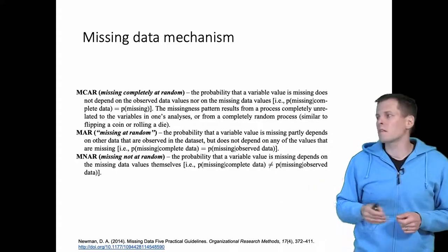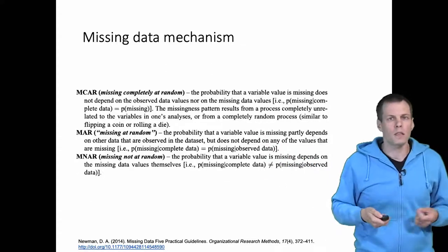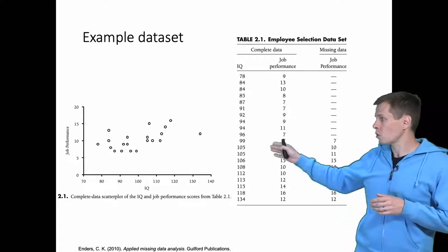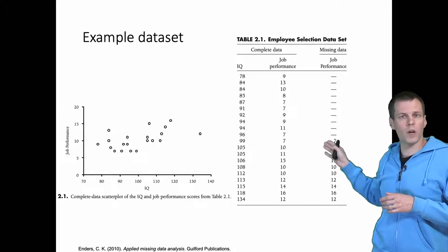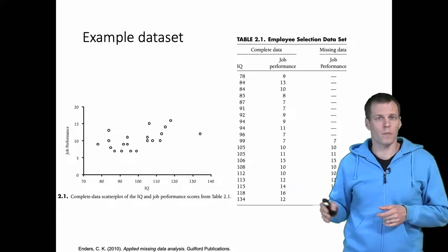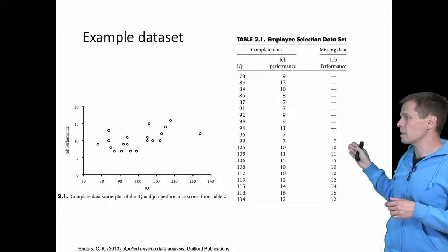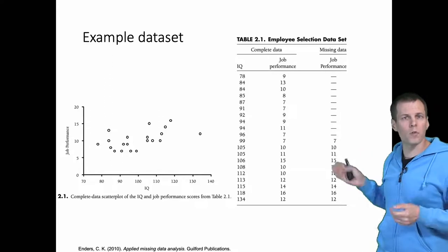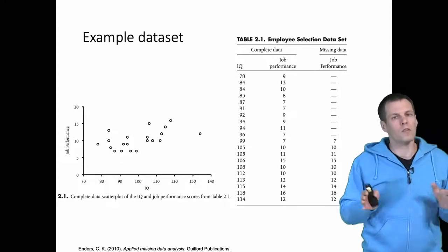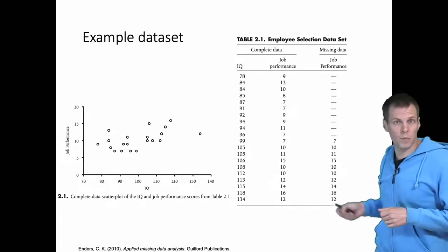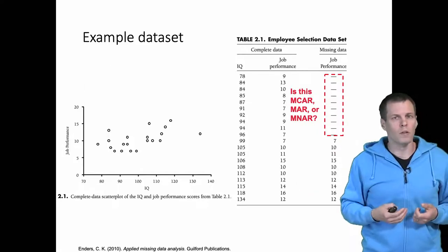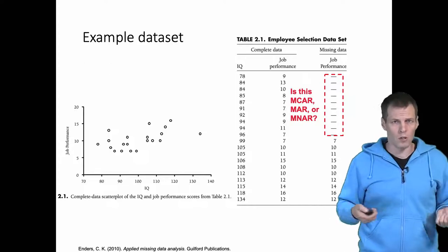To understand the differences between missing at random and missing not at random, let's look at how Enders explained this. He has this example of job performance measures — we have missing data, IQ measures, and here is a scatterplot of the data. We can see that every person with an IQ of less than 99 has missing data for job performance, whereas others have job performance data. Is this missing completely at random, missing not at random, or missing at random? We need to understand the mechanisms.